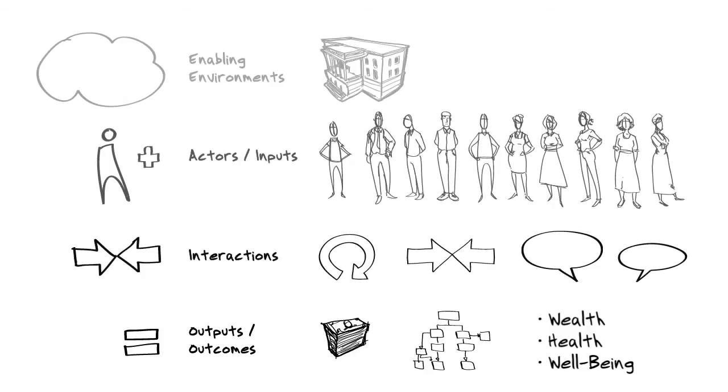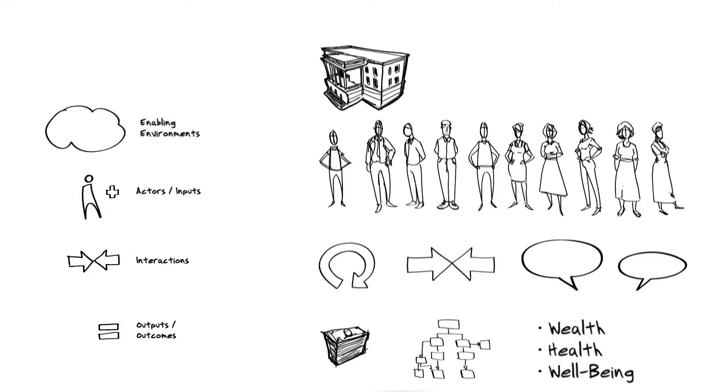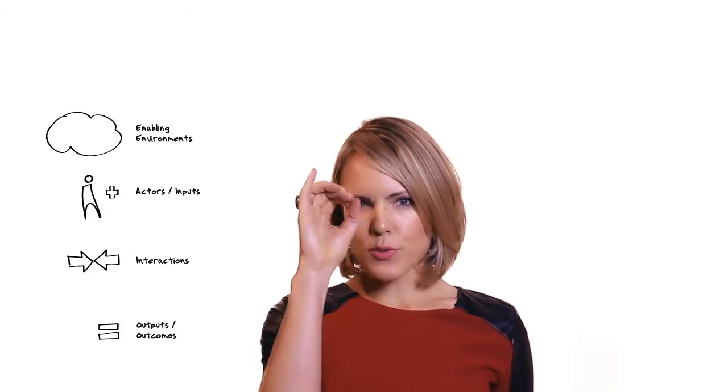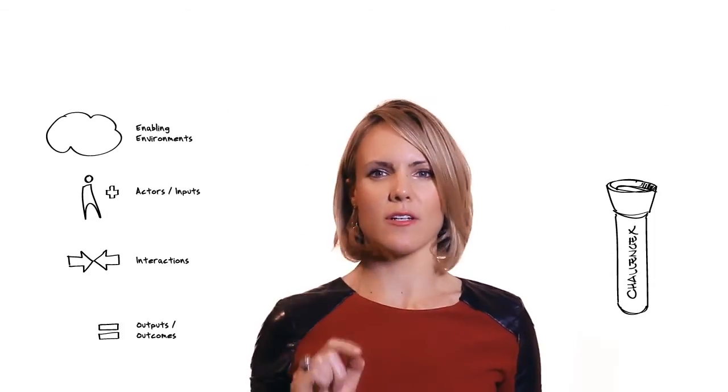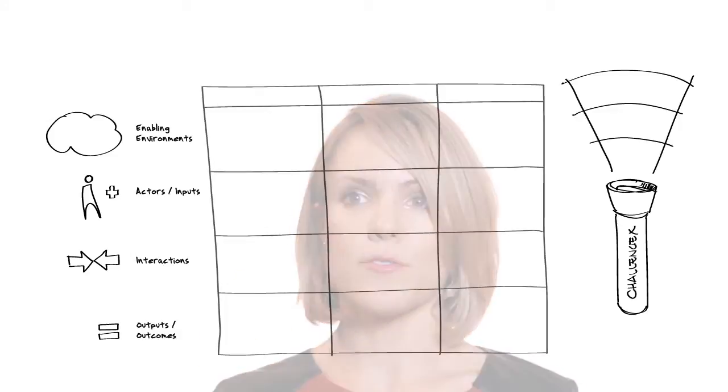We can consider those four dimensions as having relevance at a number of scales. So imagine looking through the prism of the challenge you seek to solve. Think about how that challenge plays out at at least three levels. At the most micro, that's the level of the individual. What does the enabling environment, inputs and actors, interactions, outputs, outcomes, what does it mean at the level of the individual?